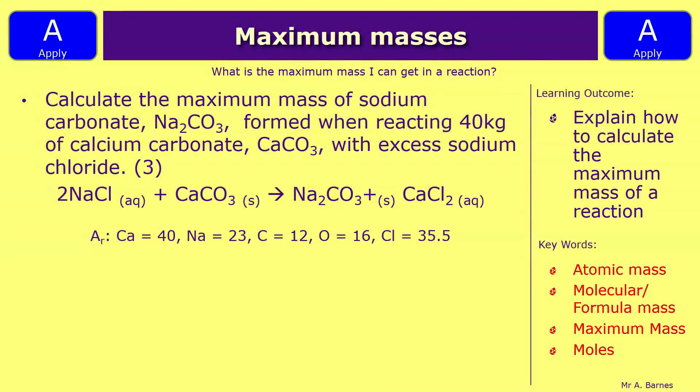Right, let's look at a question then. So this one says, calculate the maximum mass of sodium carbonate, Na2CO3, formed when reacting 40 kilograms of calcium carbonate, CaCO3, with excess sodium chloride. It's worth three marks and they've already given you the balanced equation. So think back to the steps we went through, have a go at the question, pause the video, we'll see how you've done in a min.